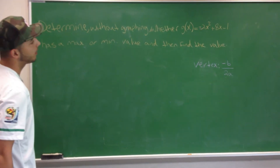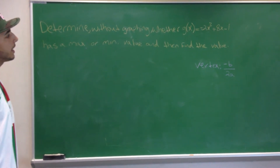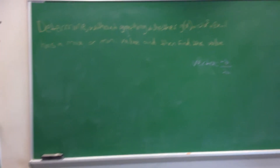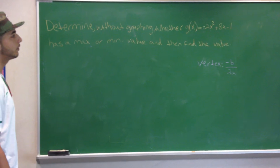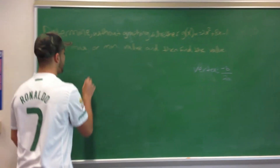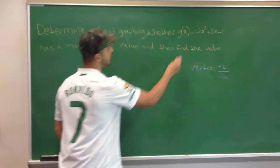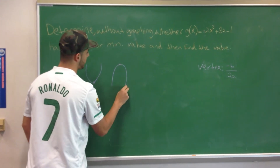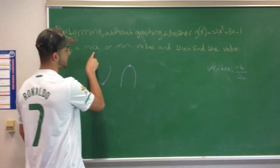Determine without graphing whether g of x equals negative 2x squared plus 8x minus 1 has a maximum or minimum value, and then find the value of g of x. We first know from the parent graph that x squared is a parabola facing upward, which has a minimum value, and then from the negative coefficient, which flips the parabola and makes it have a maximum value.